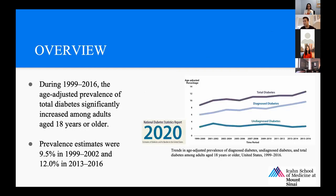Just a brief overview of some diabetes statistics. During 1999 to 2016, there was a significant increase in total diabetes among adults 18 years or older — around the turn of the millennium it was about 9.5%, and by 2013–2016 it was about 12%. It's been increasingly encountered in hospital patients, whether or not related to the primary reason for admission. In 2018, it was estimated that about 34 million people, or 10.5% of the US population, have diabetes, and that's only projected to increase. Essentially one in ten people have diabetes, and I'm sure you've seen more than that percentage managed in hospital.